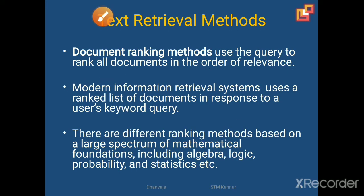In the case of document ranking method, we will use the query to rank all the documents in order of relevance. For ranking, we can use different mathematical methods like algebra, logic, probability, statistics, etc. As per the document ranking, if it is more relevant it will be given rank first, second, and so on. Modern information retrieval uses a ranked list of documents in response to a user's keyword query. Compared to document selection, this is more easy to use.